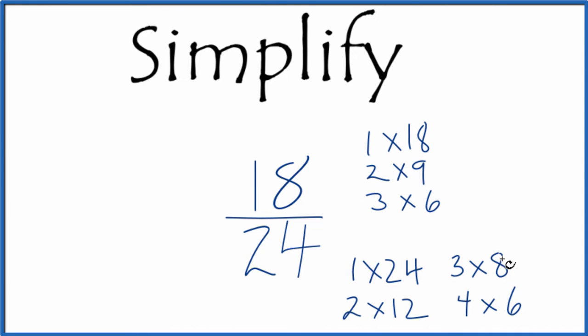As we look at the factors for 18 and 24, we're looking for the greatest common factor and it looks like 6. 6 is the greatest common factor between 18 and 24. We divide 18 by 6, 24 by 6, and we'll have reduced the fraction 18/24ths.